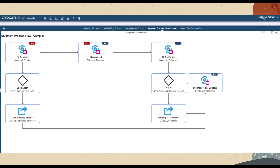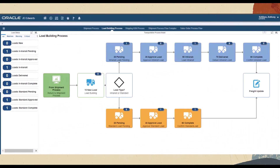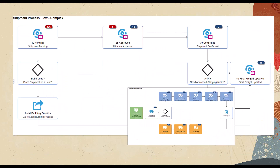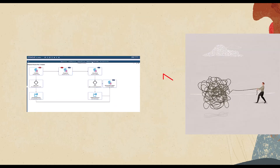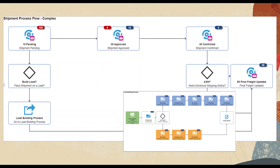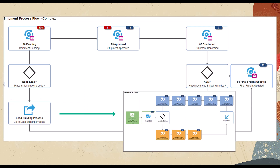Another feature of Enterprise One pages enables you to launch a different page from a tile. In addition to launching applications, reports, and orchestrations, users can now navigate easily to other pages. This feature is particularly useful if you are using pages to depict complex business processes that cannot fit on a single page, or interrelated processes. Users can simply click the tile to jump to another page and use the breadcrumb feature to navigate back to previous pages.